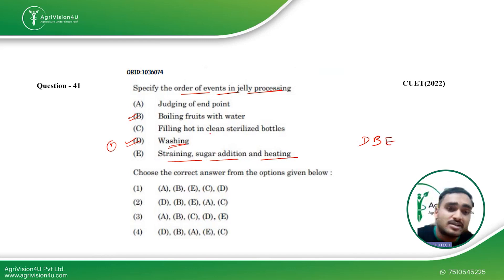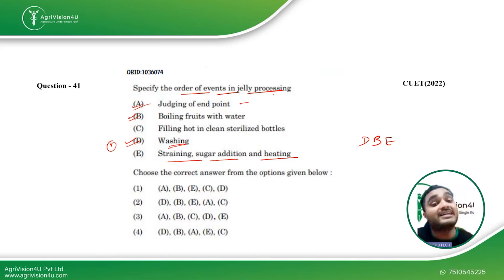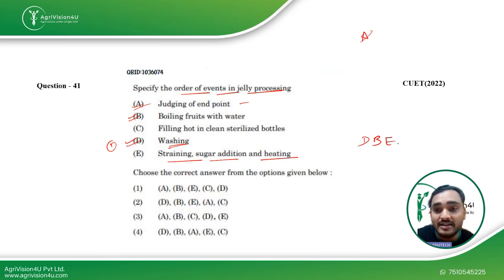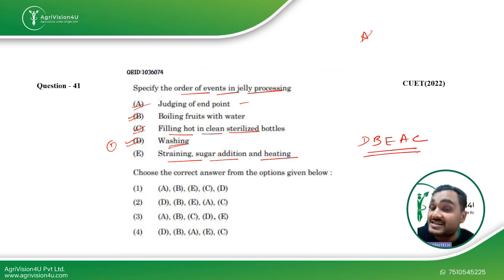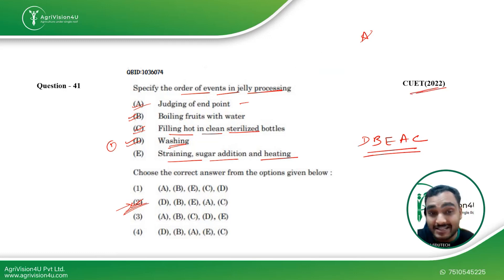After that comes judging of endpoint using a refractometer or any other method to determine the TSS. As a bonus point — be aware that the TSS of foods preserved by the sugar method and tomato products are very important. So A comes next, then C — filling hot in clean sterilized bottles. The correct sequence is D-B-E-A-C, which is the second option, making it the most optimum answer for this question asked in CVT 2022.